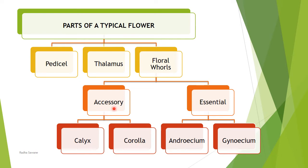Calyx and corolla are called accessory whorls because these two whorls are not directly involved in the process of sexual reproduction. Androecium and gynoecium are essential because these are the reproductive whorls. Androecium is the male reproductive whorl and gynoecium is the female reproductive whorl. Without these whorls, sexual reproduction and fertilization is impossible — that is why they are called essential whorls.